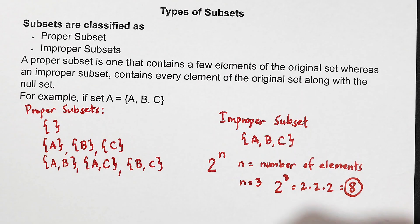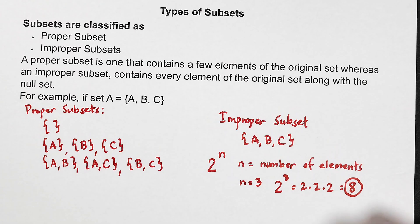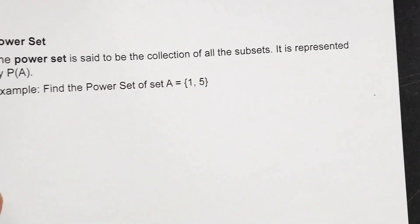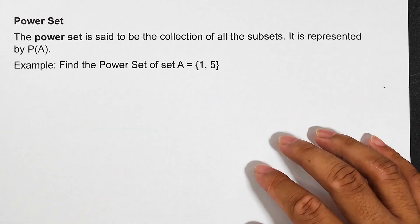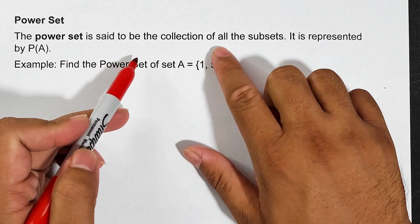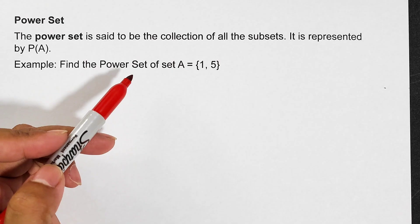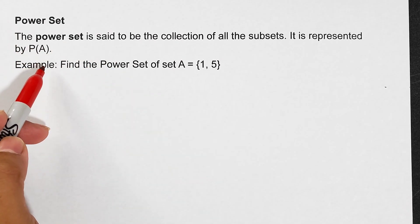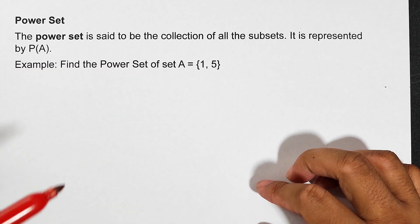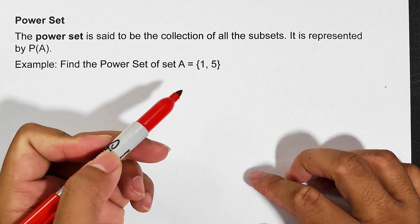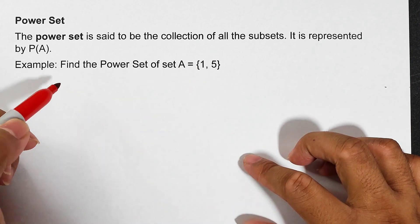Okay, so I hope guys you got the lesson about the subsets and the types of subsets. Of course, I will discuss another type of set which is called the power set. Let's give a definition for the power set. The power set is said to be the collection of all the subsets. It is represented by P(A). Now how do we get the power set? It says here collection. Before we get the power set, we need to list down all the subsets of set A in which the elements are one and five. So start with the subsets, which is the empty set.